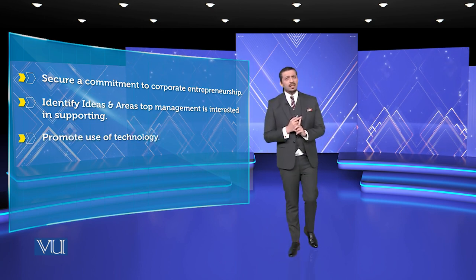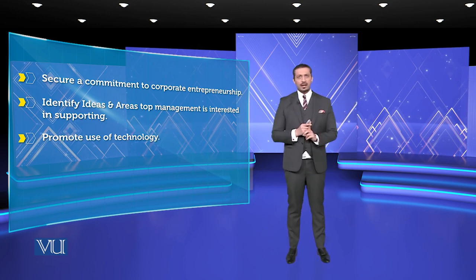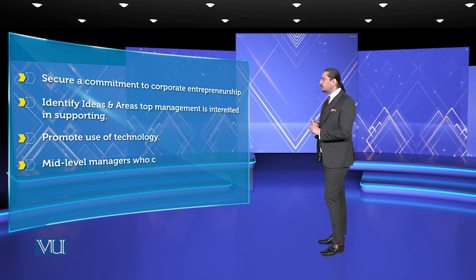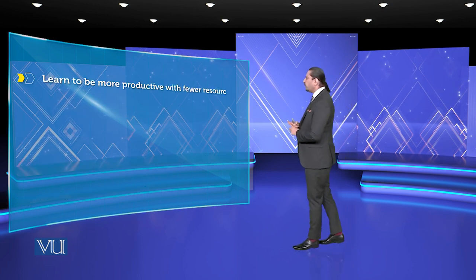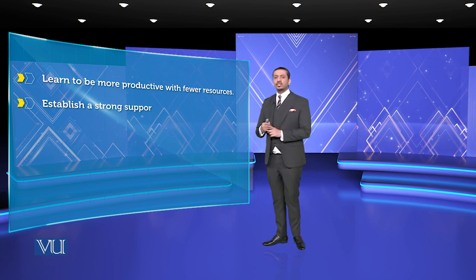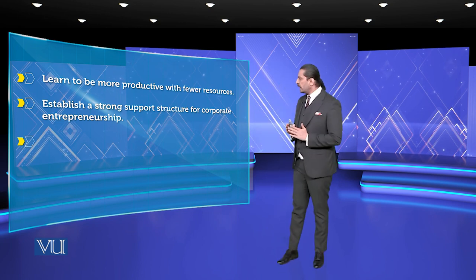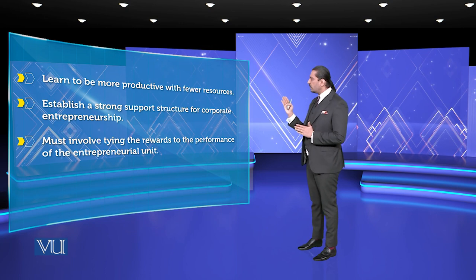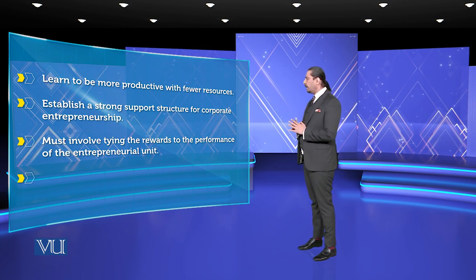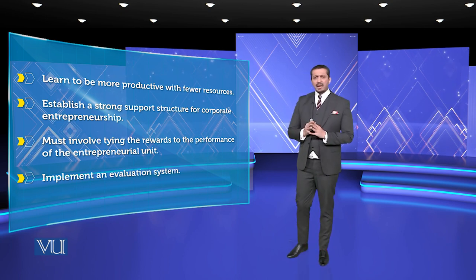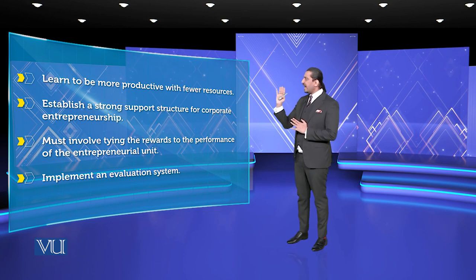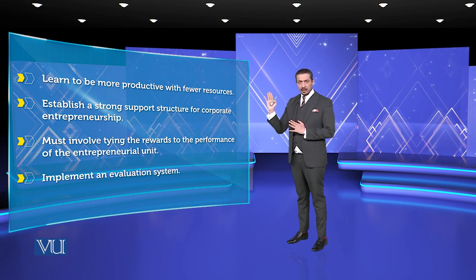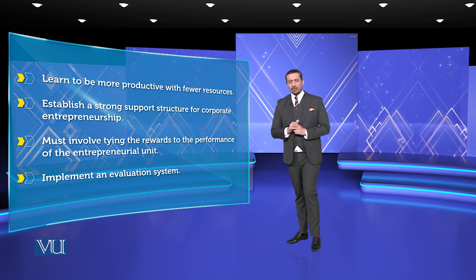For corporate entrepreneurship: first, identify the ideas in areas top management is interested in supporting; third, promote the use of technology — promoting technology is good, but reducing human capital is not good at all. Moving to mid-level management, who can train, employ, and promote knowledge sharing. Fifth is to understand customers better. Sixth is to learn to be more productive with fewer resources. Seven is establishing a strong support structure for corporate entrepreneurs. Eight is tying rewards to the performance of the entrepreneurial unit, and nine is implementing an evaluation system.